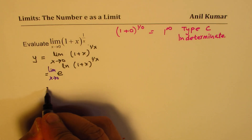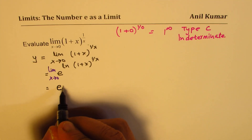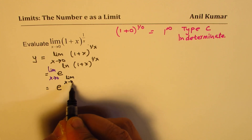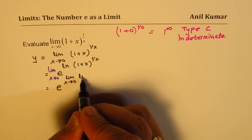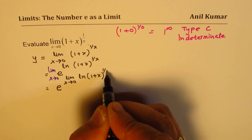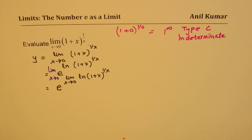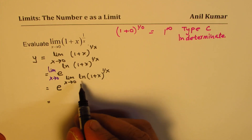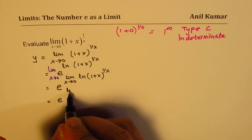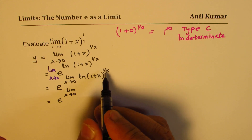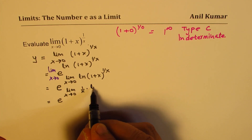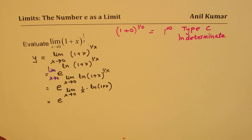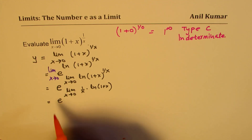Using the properties of limits, we write this as e to the power of [limit x approaches 0 of ln(1 plus x) to the power of 1 over x]. Using our logarithmic rules, this becomes e to the power of [limit x approaches 0 of (1 over x) times ln(1 plus x)]. Now we have to find the limit of the exponent.